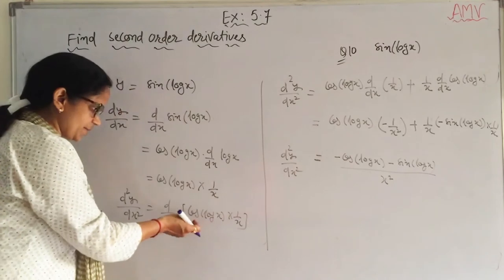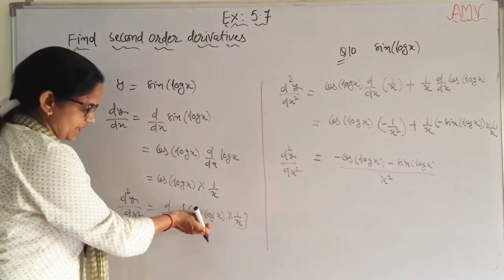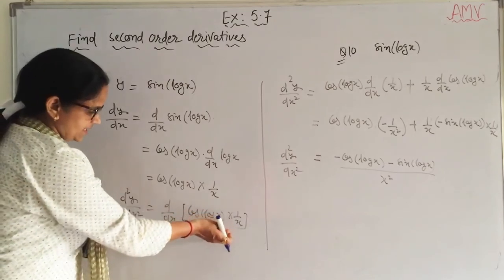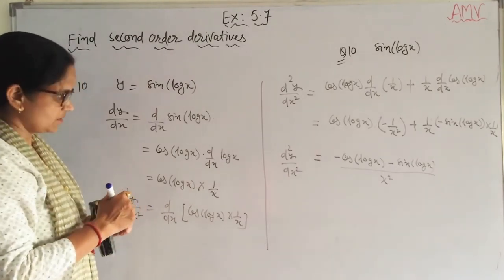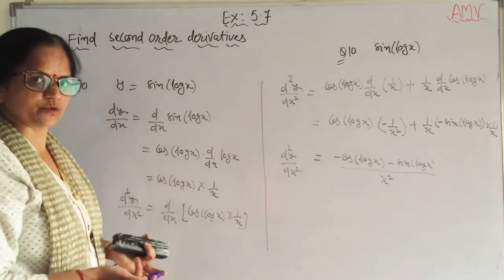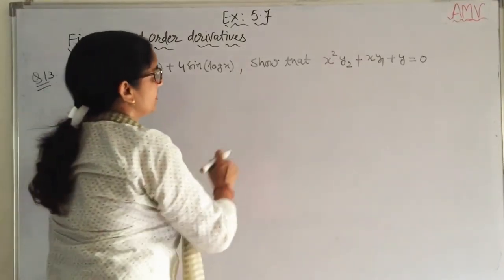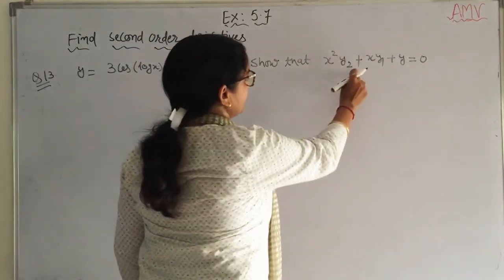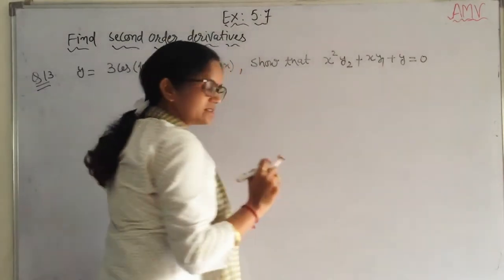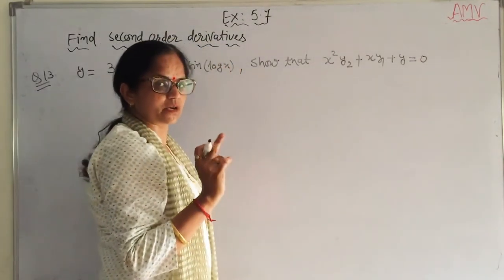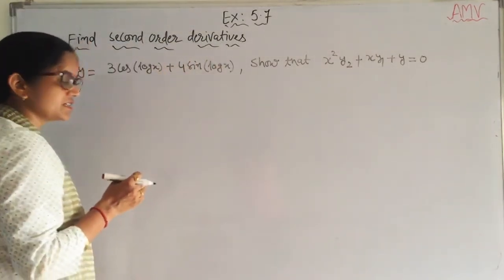You may also apply the quotient rule, taking cos(log x) as f(x) and x as g(x), and apply the f(x)/g(x) rule. Now question number 13: y is given and we have to show that x²y₂ + xy₁ + y = 0, where y₁ means the first derivative and y₂ is the second order derivative of y with respect to x.